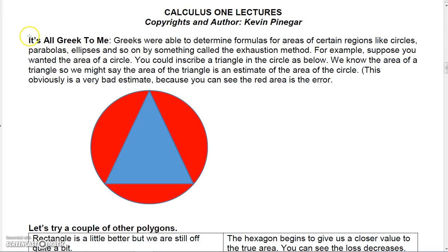Let's start with some polygons and circles. The Greeks were able to determine formulas for certain regions like circles, parabolas, ellipses, and so on by using something called the exhaustion method.